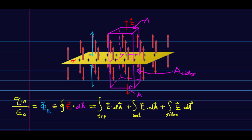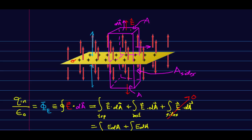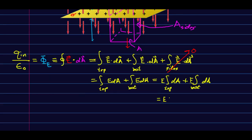The dA vectors sticking out of the sides are perpendicular to the E field, so in E dot dA we have cos(90°) = 0, and the entire side integral disappears — no flux through the sides. For the top and bottom, the E field is parallel to the dA vectors, so theta is zero. The E field is constant everywhere on each surface, so I can pull it out. Integrating dA over the top and bottom each gives area A. So overall I get 2EA.